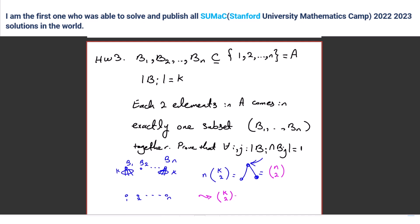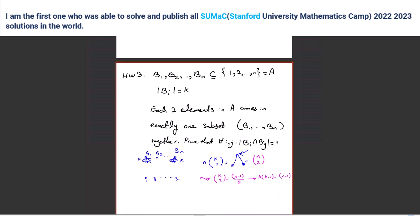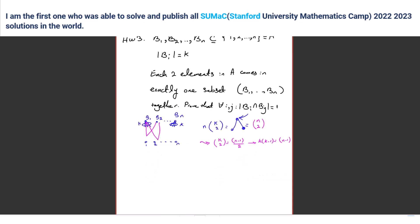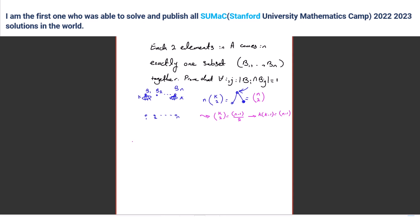Yes, so k choose 2 equals (n minus 1)/2, or equivalently k times k minus 1 equals n minus 1. Now, the problem asks us to prove that for all i ≠ j, Bᵢ ∩ Bⱼ = 1. This means we should prove there is no cycle of length four — because if there were, elements one and two would appear in two different subsets instead of exactly one.